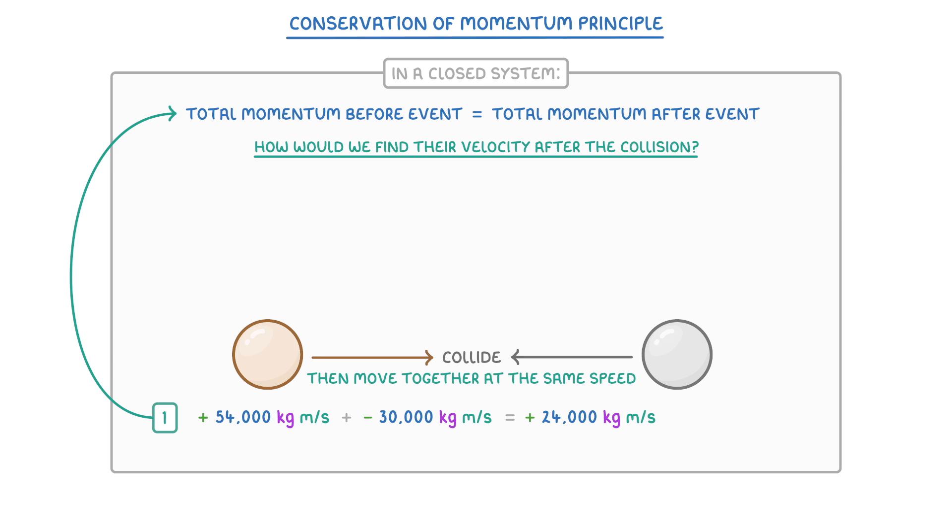Then because of our conservation of momentum principle, we know that once they've collided, their total momentum must still be positive 24,000. And remember that in this scenario, a positive number means that it's going to the right. So after our particles collide together, they'll both get carried to the right, because the brown one had more momentum.